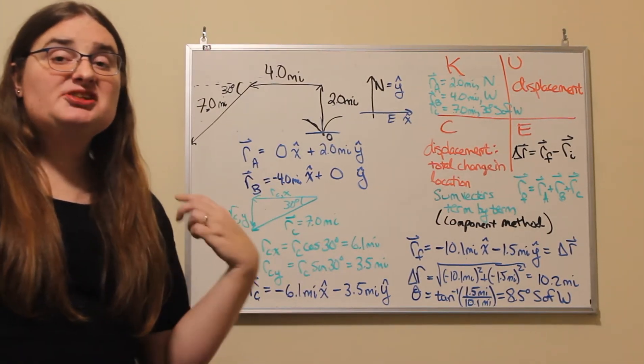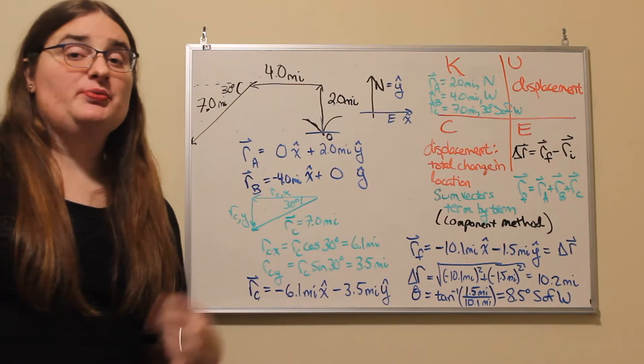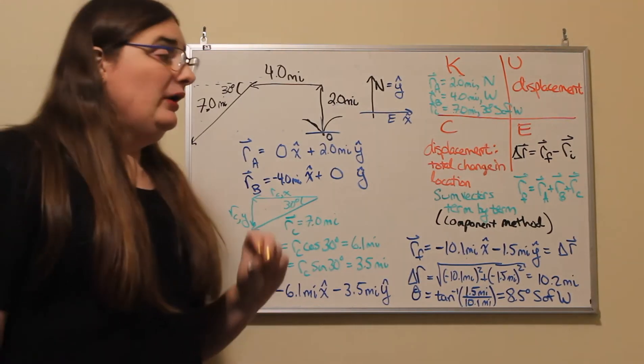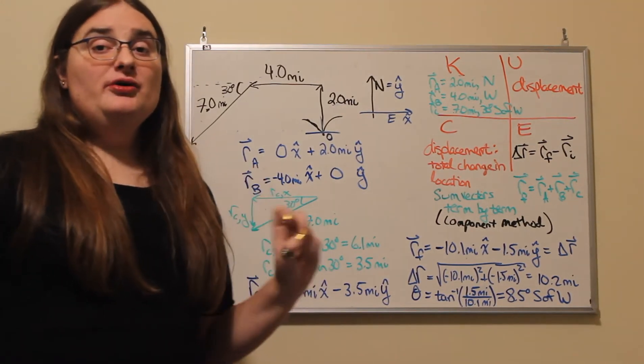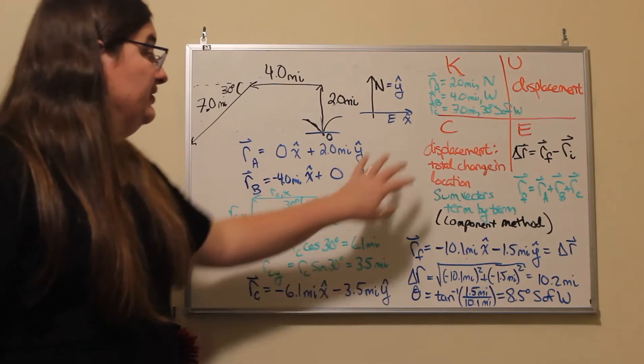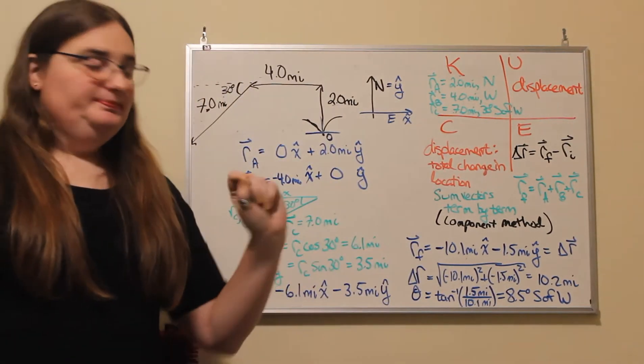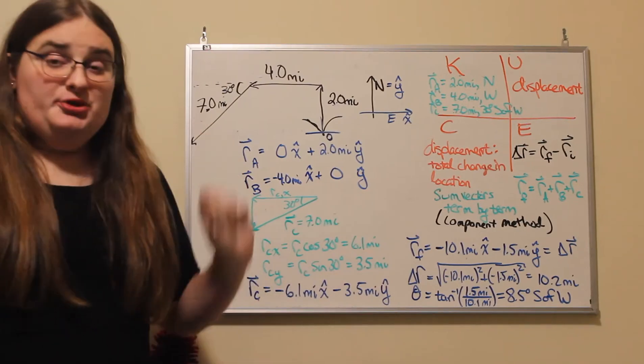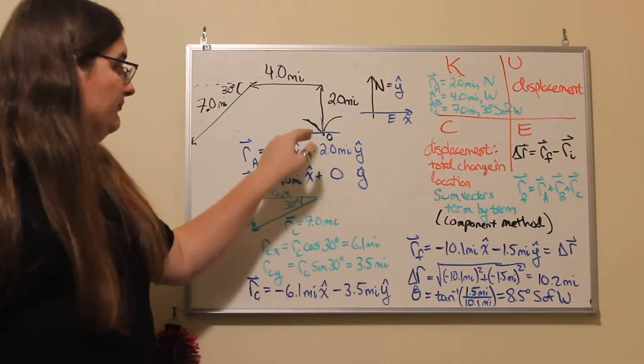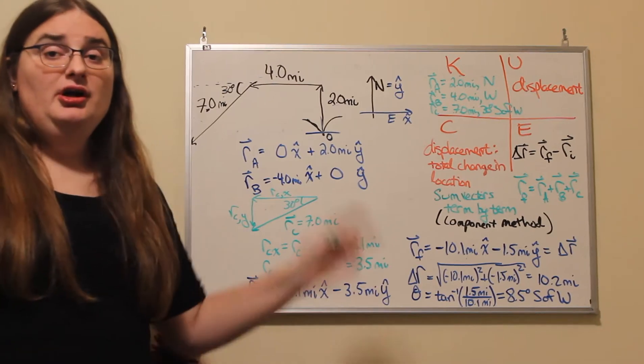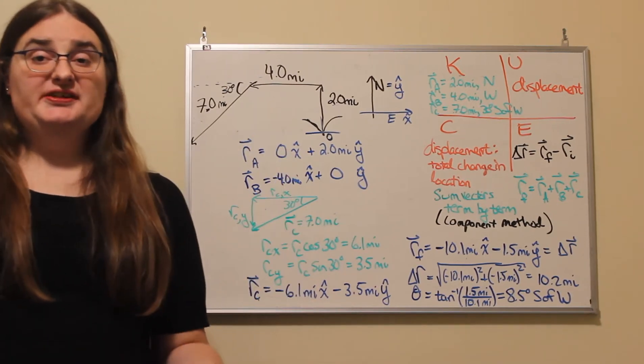What is the displacement of the bird from its original location? As we sort out our known and unknown information, our concept with displacement. Displacement is our total change in location. So if we say the bird starts at our origin, our initial position would be zero.